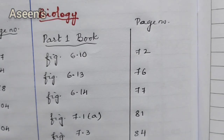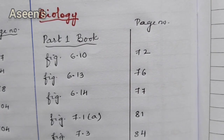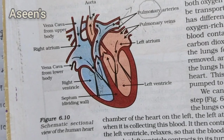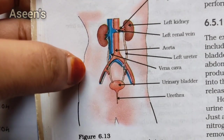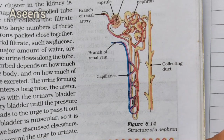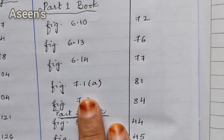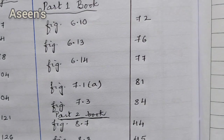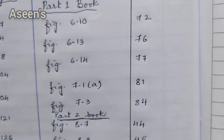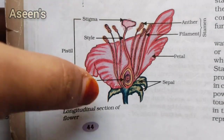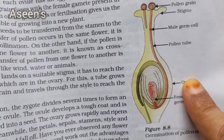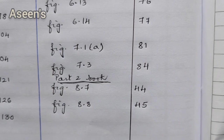For biology diagrams from Part 1 book: page number 72 — the schematic representation of the heart; Figure 6.13 on page number 76; the nephron on page number 77; Figure 7.1a — the neuron; and Figure 1.3 on page number 84, which is the human brain. From Part 2 book, there are two diagrams: Figure 8.7 on page 44 and Figure 8.8 on page 45.